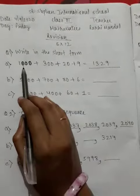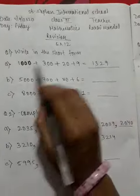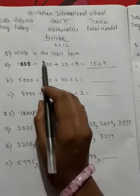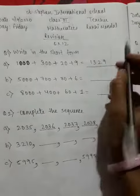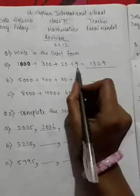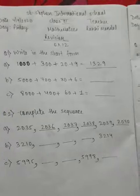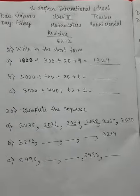So first we will write here, 1 in 100 place, 3 in 10th place, 2 and this is in 1's place.